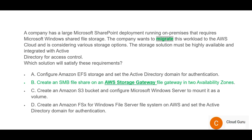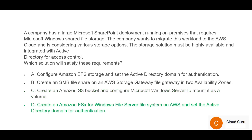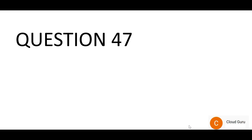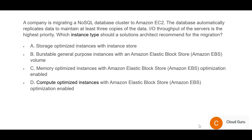Hence option B is wrong. Option C says to use an S3 bucket as a mount, which is wrong — it cannot be used as a mount. Option D: FSx is for high-performance Windows platform and it also mentions setting the Active Directory domain for authentication, which serves our purpose. Hence option D is the right answer. We'll lock this answer and move forward.